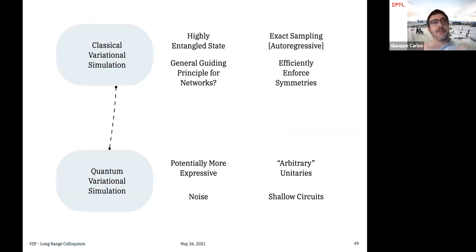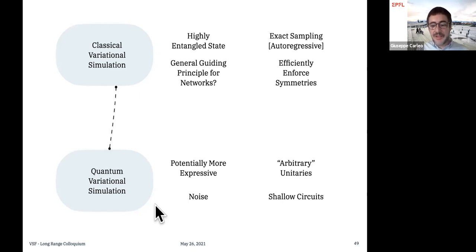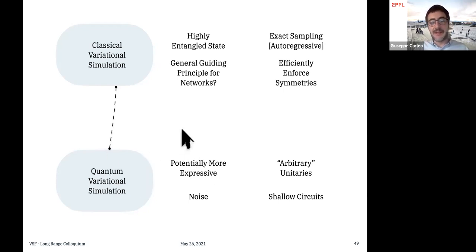To summarize: I gave a broad overview of applications of neural network states to simulate many-body systems classically — for fermions, for ground states of frustrated magnets, and for circuit dynamics. I also gave an idea of what we are doing with variational quantum circuits on quantum computers. These are potentially more expressive, but at this point in time, the expressivity of quantum circuits is still to be demonstrated fully, simply because we don't have large enough quantum computers.